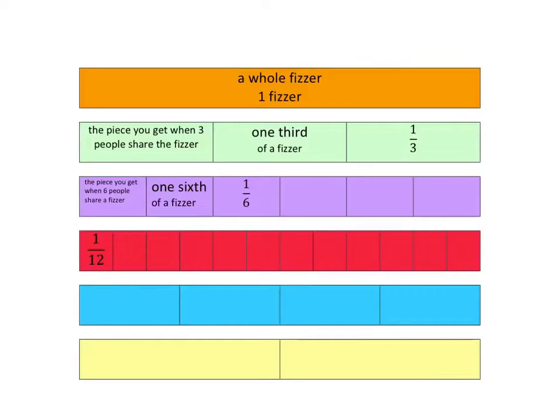Before we look at the blue one, you tell me what the name of each of those pieces is going to be. We've cut it into four, so we're taking this fizzer and four people are going to share it.